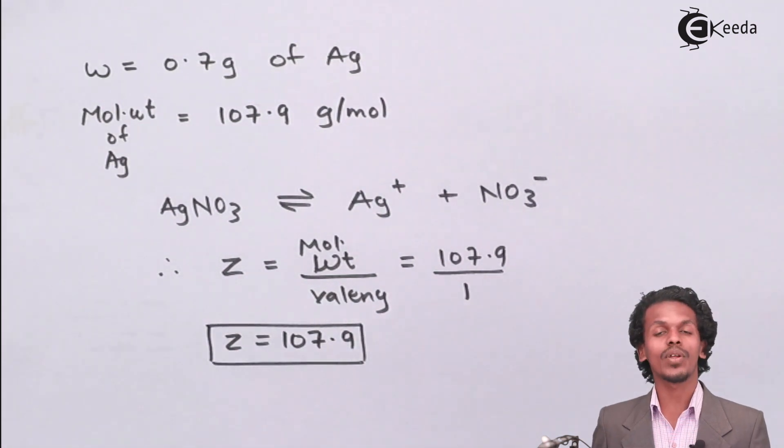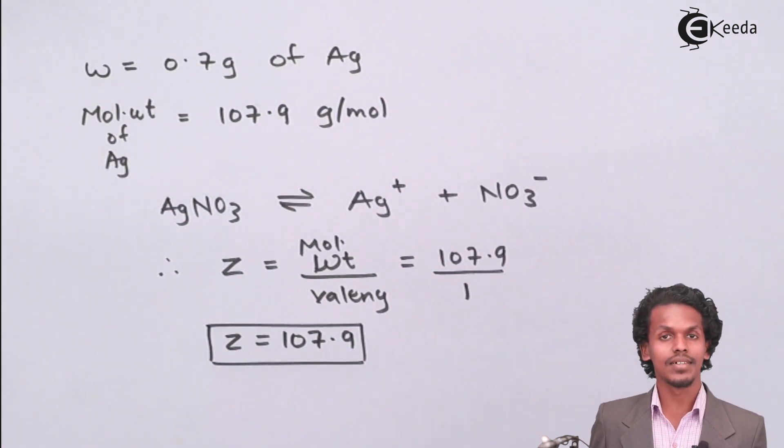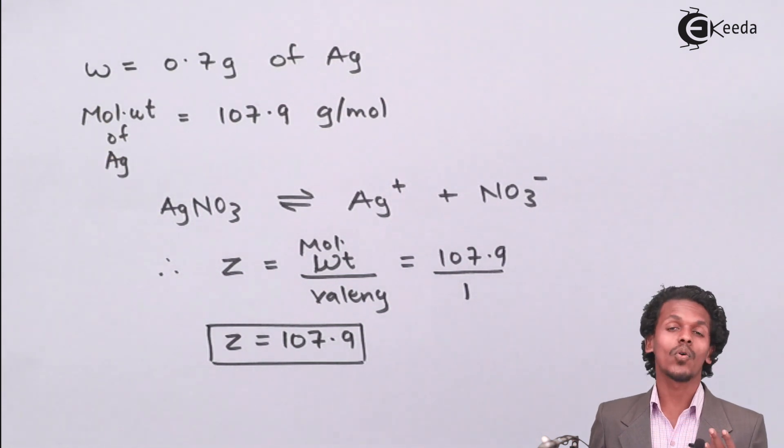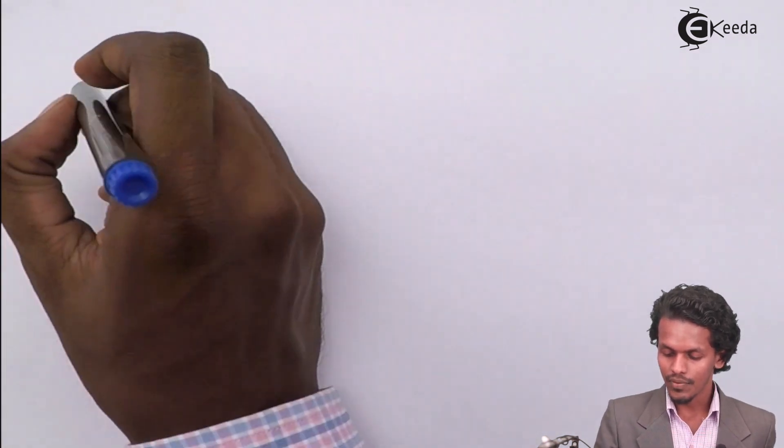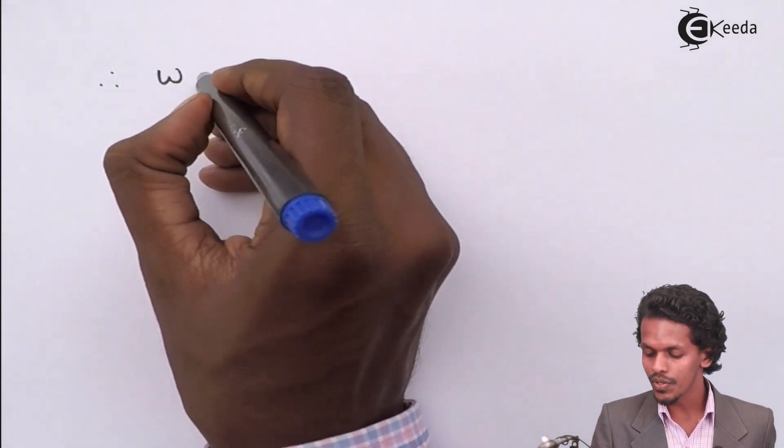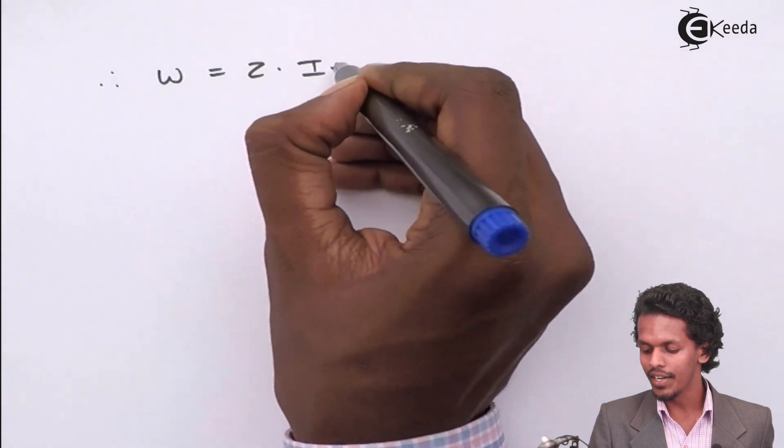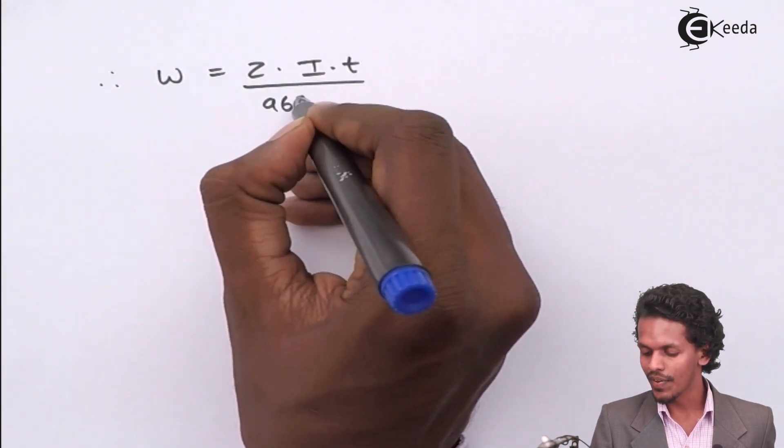From this data we have to calculate the value of i into t. Since we know the formula w = z × i × t / 96500.